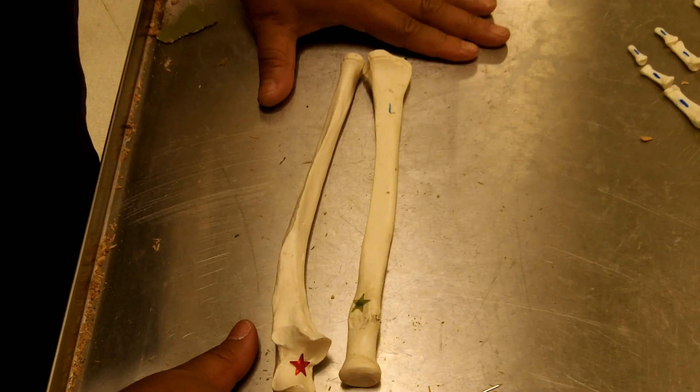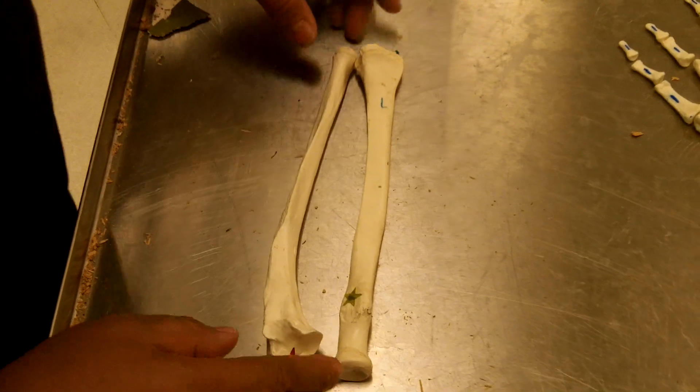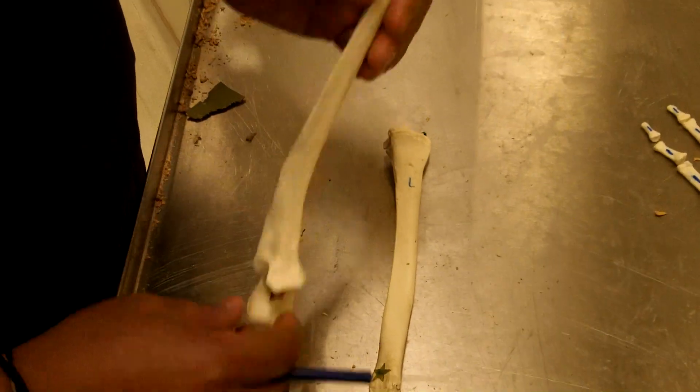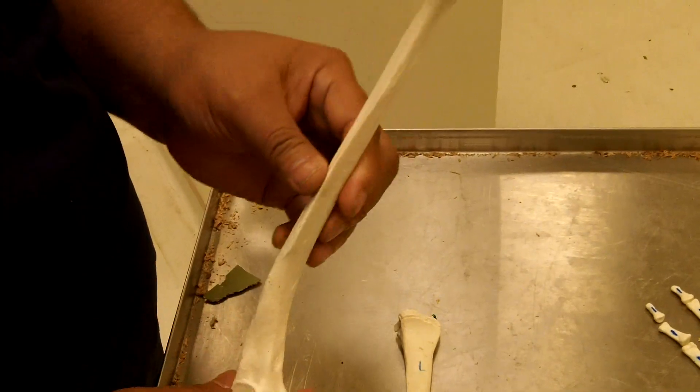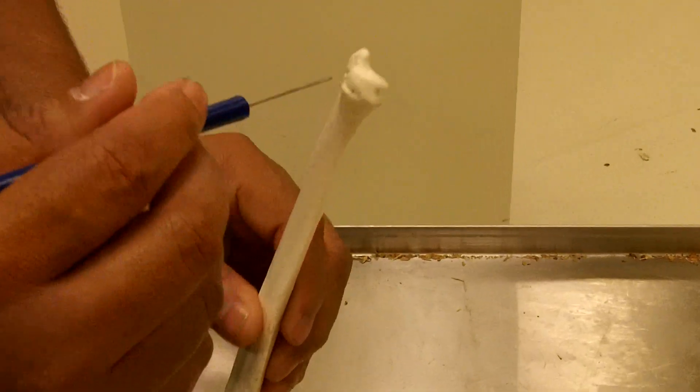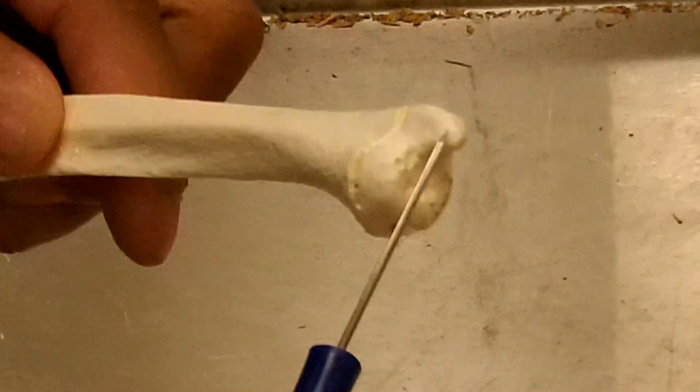These two bones are the radius and the ulna. Now, this is the ulna. This is the head of the ulna. This is the styloid process of the ulna.